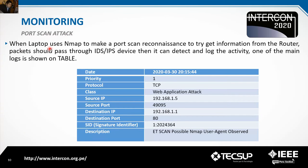Port scan attack: when a laptop uses Nmap to perform a port scan reconnaissance to gather information from the router, packets pass through the IDS/IPS device, which can detect and log the activity. One of the main logs is shown in the table — priority 1, protocol TCP, class: web application attack, with IP addresses, ports, and description: possible Nmap user agent observed.